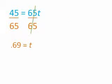I must divide by 65 to get T by itself. When I divide by 65, I get .69 equals T.